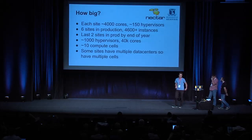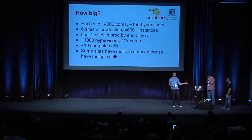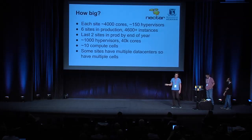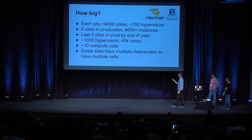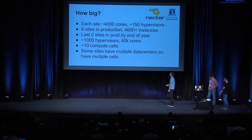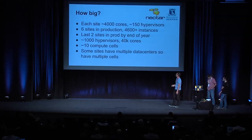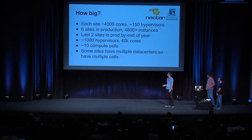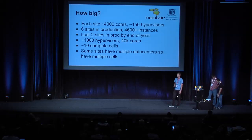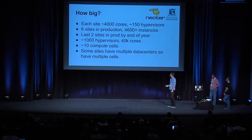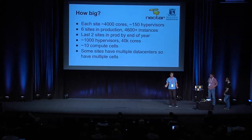In terms of scale and architecture — we're the smallest, going from smallest to biggest. We have six sites in production so far with about 4,500 instances running. In the end, we'll be up to about 40,000 cores and 1,000 hypervisors spread out. We tend to have around 100 to 200 hypervisors per compute cell — that seems to be a nice number in terms of splitting up the RabbitMQ and database connections. We should have about 10 compute cells in total by end of year.